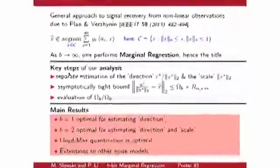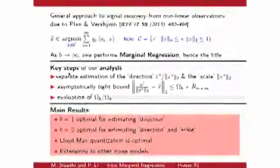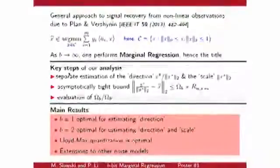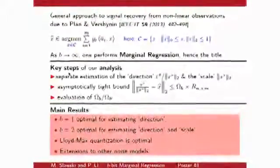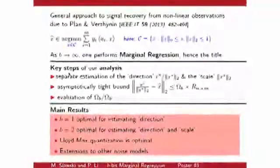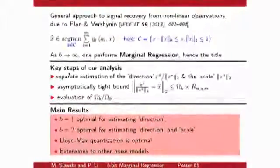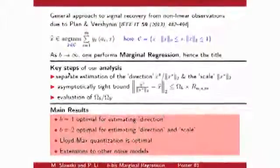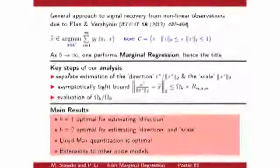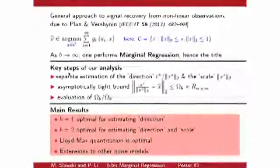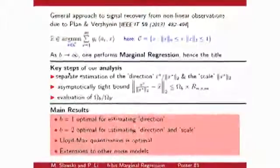So obviously this trade-off depends on the noise level, on the specifics of the quantization scheme, and the recovery algorithm. So in our paper we concentrate on a single recovery algorithm, that is, based on a general approach to nonlinear compressed sensing proposed in a paper of Plan and Vershynin. The approach is very basic in that it minimizes a linear objective over a certain constraint set. So why do we call this marginal regression, or B-bit marginal regression? Well, it turns out that as B tends to infinity, it's not hard to show that the approach of Plan and Vershynin is equivalent to marginal regression. So analysis proceeds basically as follows. We first separate the estimation of the direction, that is a normalized signal, and the norm of the signal. We then derive an asymptotically tight bound on the L2 distance of our normalized signal and the marginal regression estimator, which we then decompose as a rate function R and SM, and another term that only depends on B. And we're then positioned to compare B-bit measurements and B-prime bit measurements by evaluating the ratio of Omega and Omega B-prime. So all of this, we then get the following results, namely that B equal to 1 is optimal for estimating the direction, that B equal to 2 is optimal for estimating the direction and the scale, that Lloyd-Max quantization is an optimal quantization scheme, and we also do an extension to other noise models. So for more details, you are encouraged to stop by at our poster. Thank you.